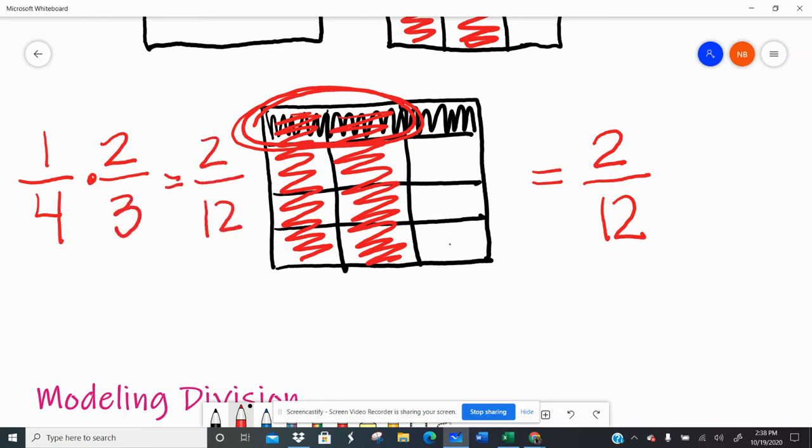Well, let's check. One times two is two, four times three is twelve. That is true. My answer can be simplified. That's really one sixth, but my model shows that I have two colored out of twelve, which means I have one colored for every six.